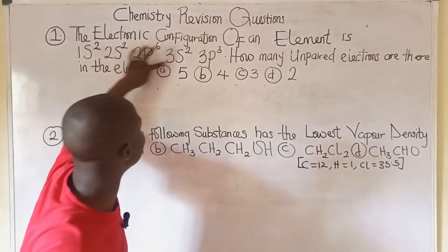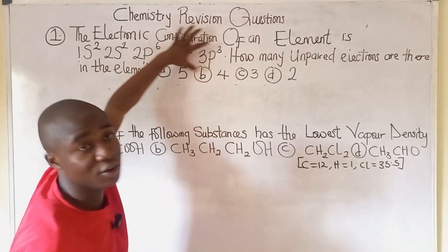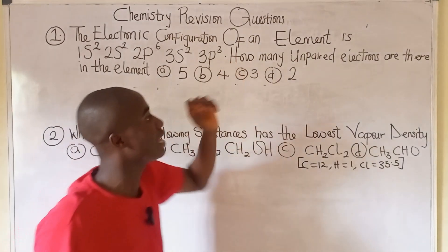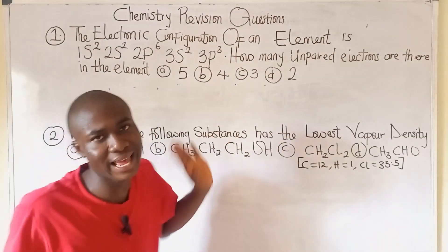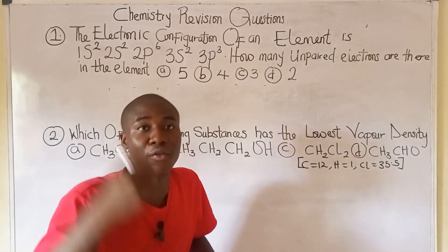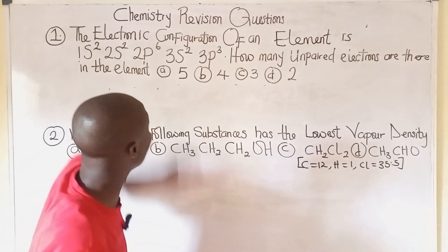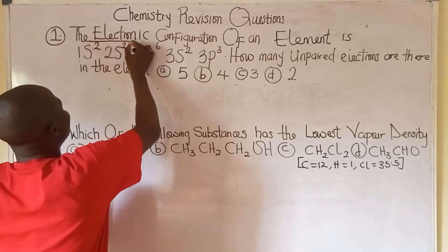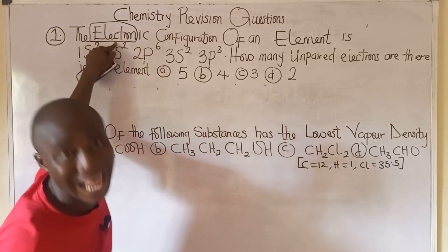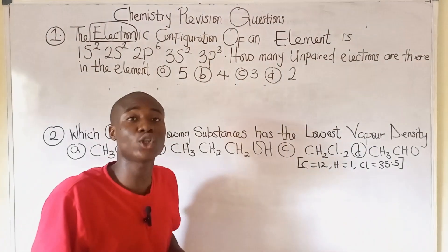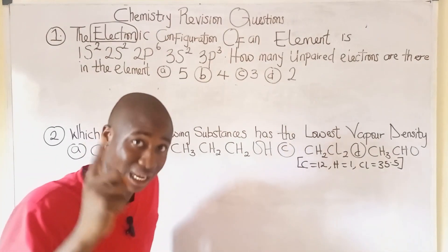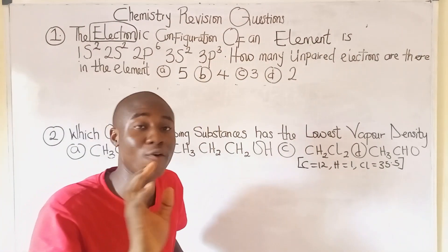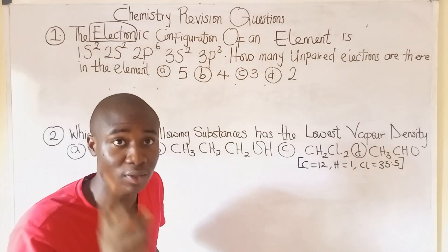They've given us the electronic configuration of this unknown element. The question asks: how many unpaired electrons are there in the element? So we are trying to find the number of unpaired electrons found in this element with the given electronic configuration. Before we solve this question, we have to take note of something very important because it's going to help us solve this without stress.